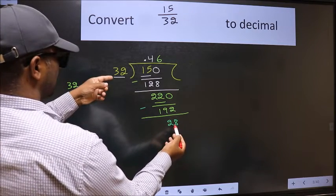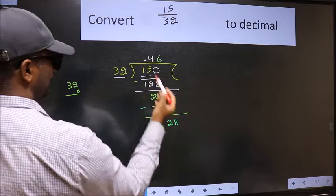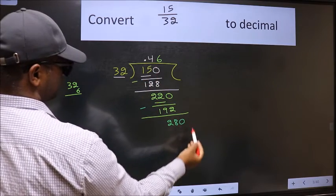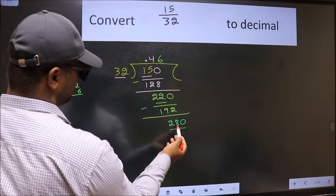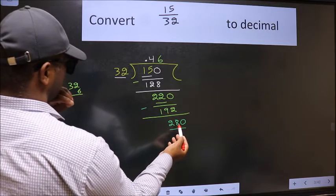28 is smaller than 32. And we already have the decimal. So directly take 0. So 280. A number close to 280 in 32 table is, let us take 32 8s.